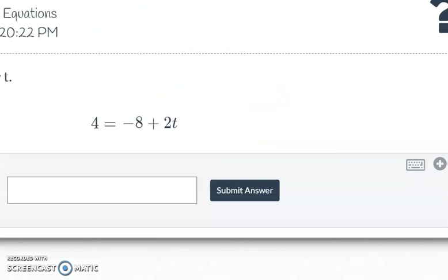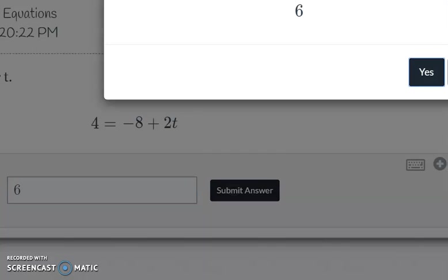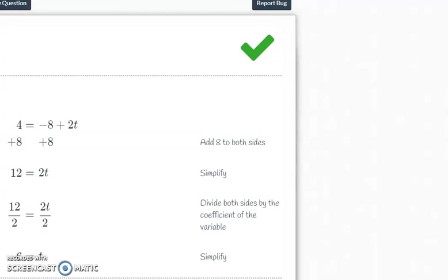Let's go check that, see if it works in here. t equals 6. Submit answer. Yes, I want to submit that. And we've got a green check mark. Okay. So that's an overview of solving basic two-step equations. Thanks for watching.